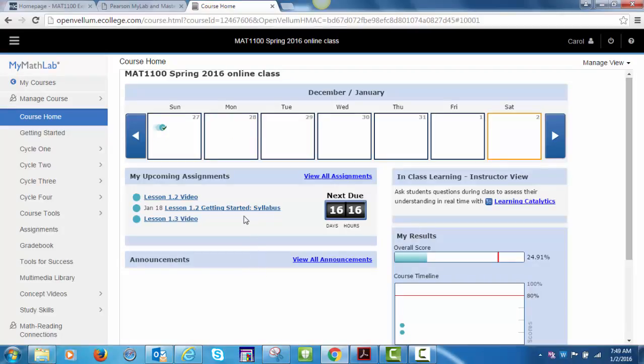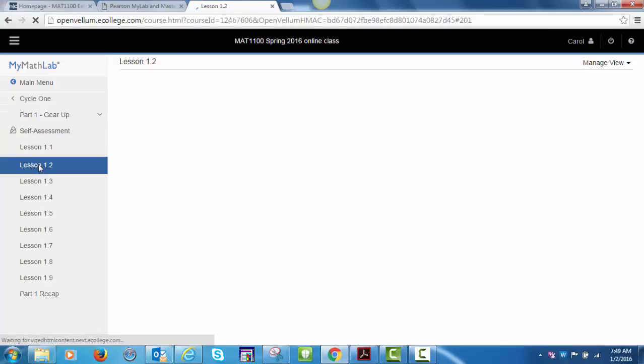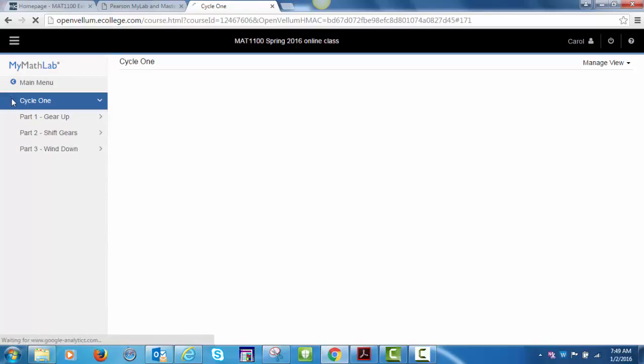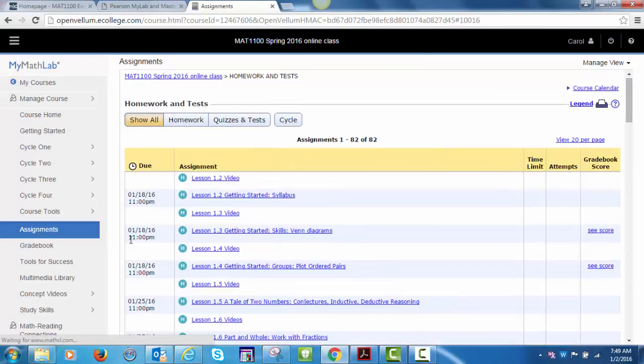Here is what you see if you use the MyMathLab with Pearson eText course home option. On the left toolbar, you can navigate the course by selecting the content, cycle contents, homework, assignments, etc. If you select a particular cycle and lesson, you can access the cycle readings from here. You can also get to your homework. In the assignments area, the lesson videos are included along with the homework and quizzes. The videos are not required, but many students find them helpful.